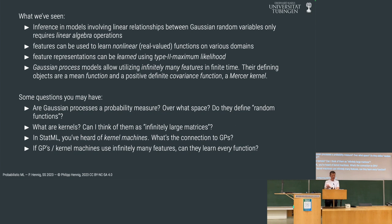One thing I pointed out is that these covariance functions have the interesting property that they are positive definite, and the term for positive definite functions is that they are a kernel. This is the point where I should ask: in the statistical machine learning class, have you talked about kernels yet?